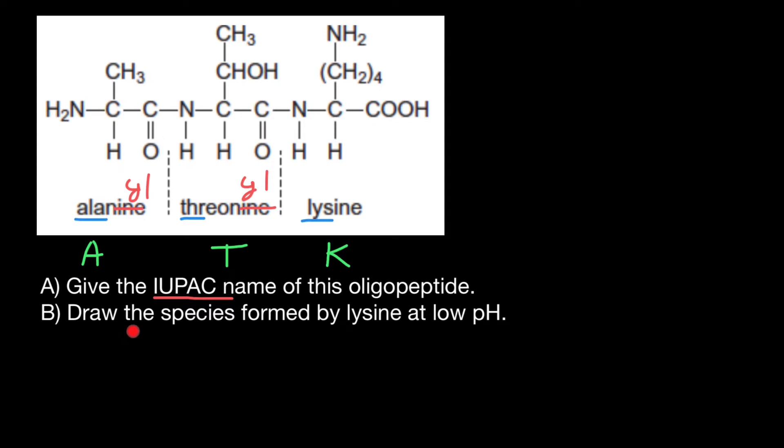Okay, and second question, draw the species formed by lysine at low pH. At low pH, we have a lot of free hydrogens, hydrogen ions or protons. So everything that can be protonated in lysine would be protonated.